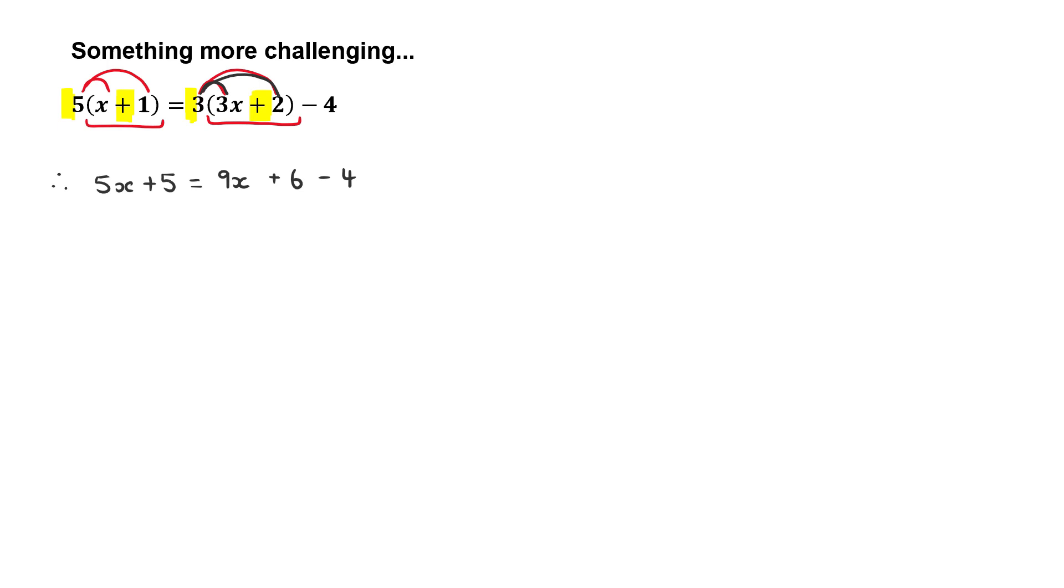Now, we can go ahead and group our like terms. So, remember I said to you, we're not going to move the 5 over. Instead, we are subtracting 5 from both sides.